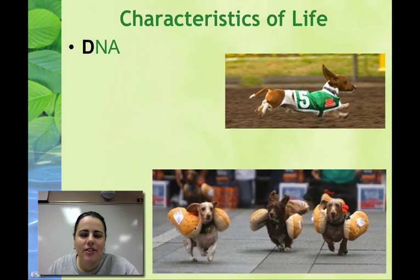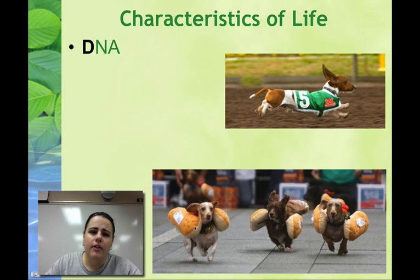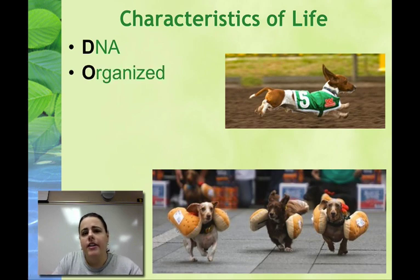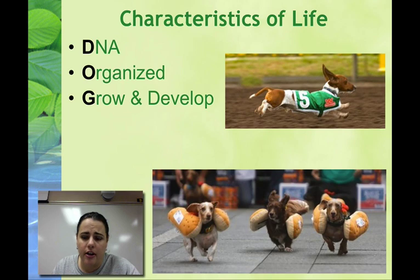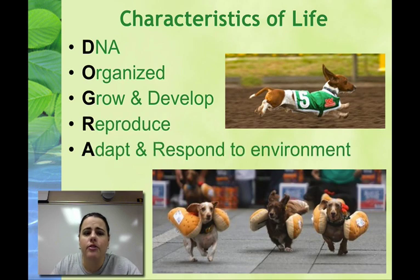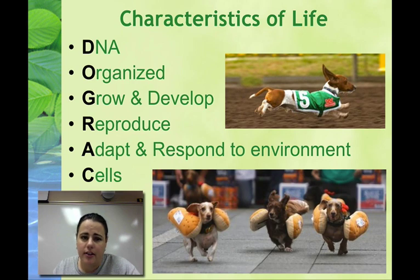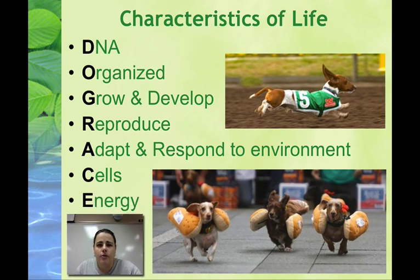So the characteristics of life: the first one is DNA — all living things have DNA. All living things are organized, all living things grow and develop. That's your DOG. The RACE: all living things can reproduce, they can adapt and respond, they're made of cells, and they need energy.